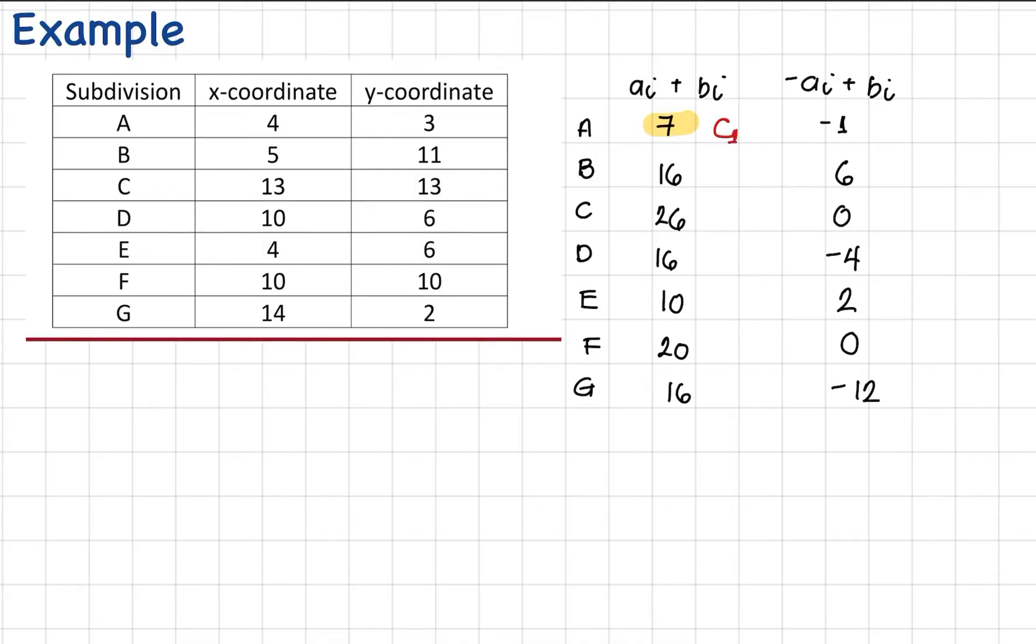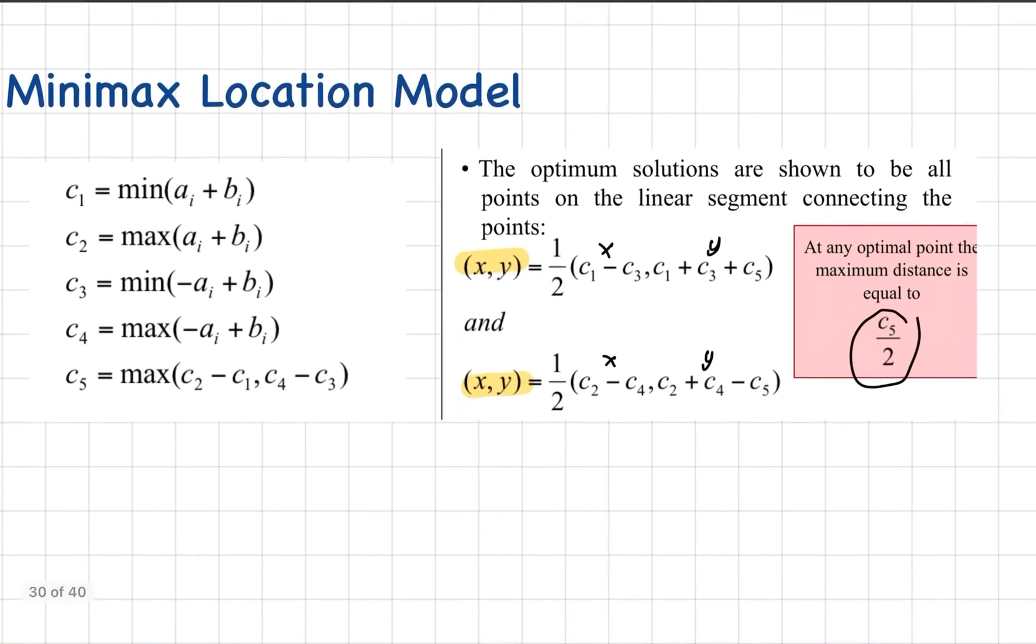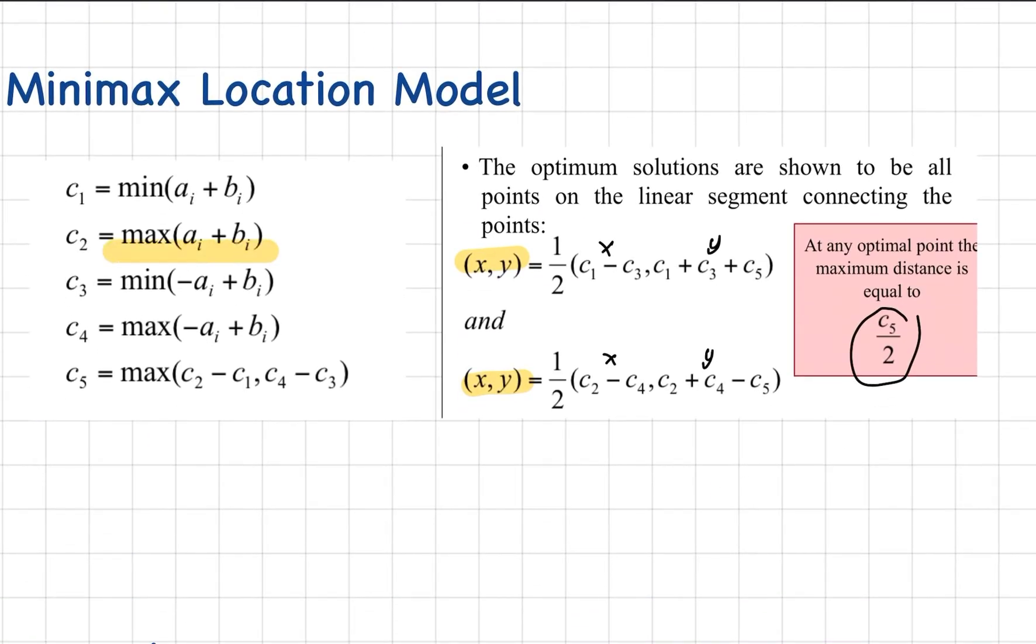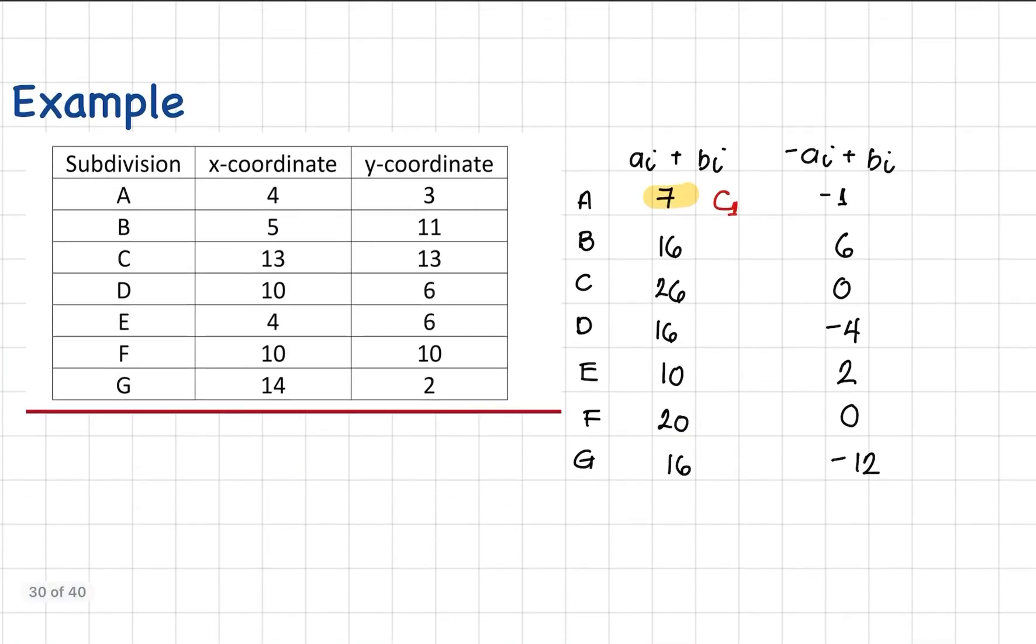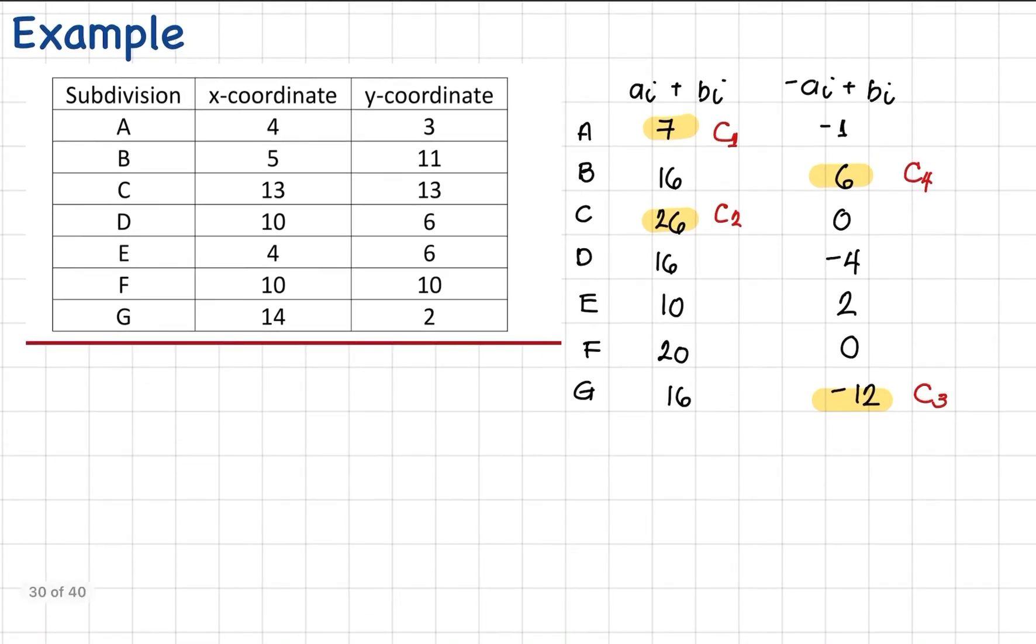And then the maximum value of A plus B, that's C2. The maximum value among this first column is 26, so that's our C2. C3 is minimum on the second column. The minimum value here is negative 12. And then the maximum value in this column is 6, so that is your C4.